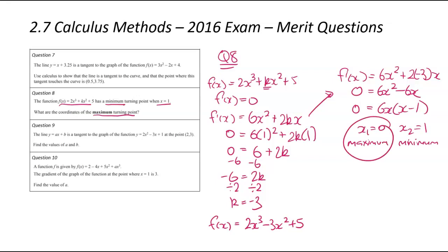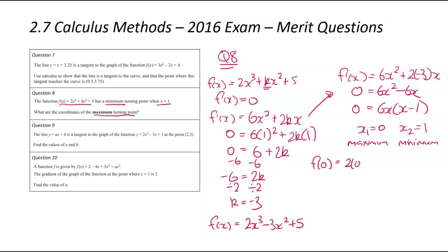Now that we know x equals 0 is where the maximum is, we substitute into the function with negative 3 in place of k to get the y value. So f(0) equals 2 times 0 cubed minus 3 times 0 squared plus 5. All the zero terms cancel, leaving 5. That means our maximum turning point is at (0, 5).